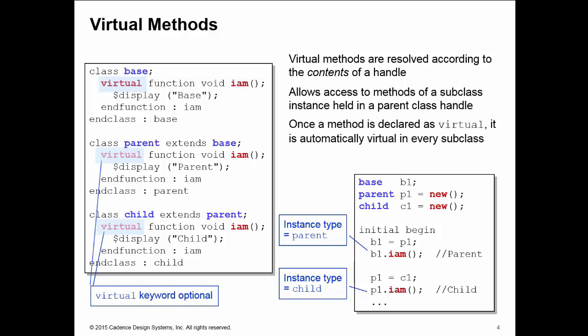When we declared the 'I am' method in the base class as being virtual, it was automatically virtual in the parent and the child class. So the virtual keyword on the 'I am' implementations in parent and child is actually optional. Once it's declared as virtual in the base, it's automatically virtual in any subclass. You can omit the virtual keyword, although you may want to keep it there for readability.